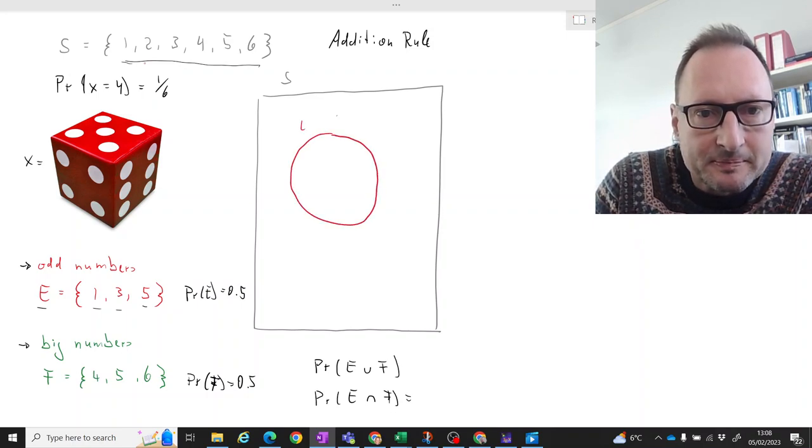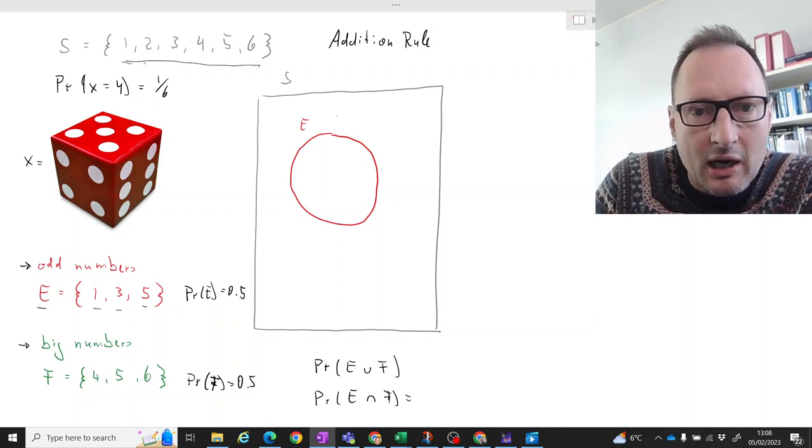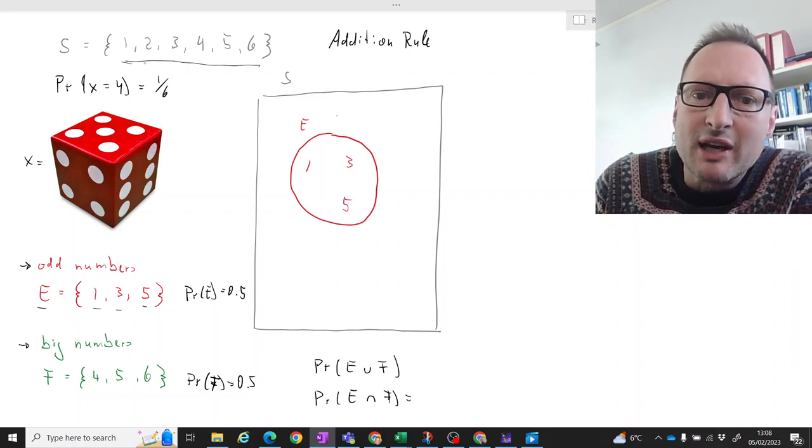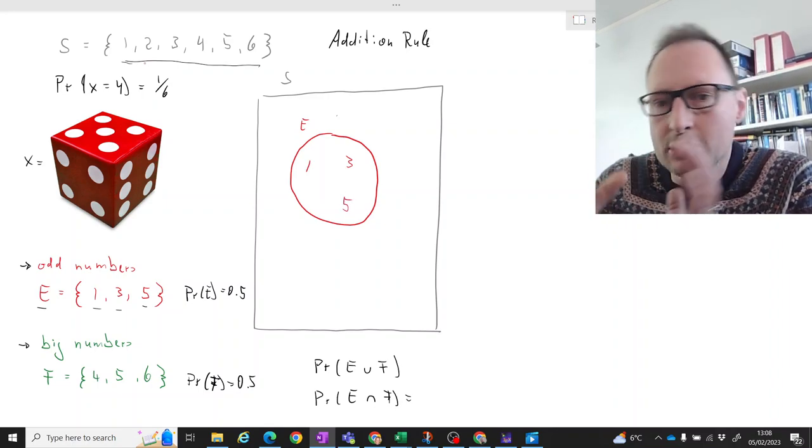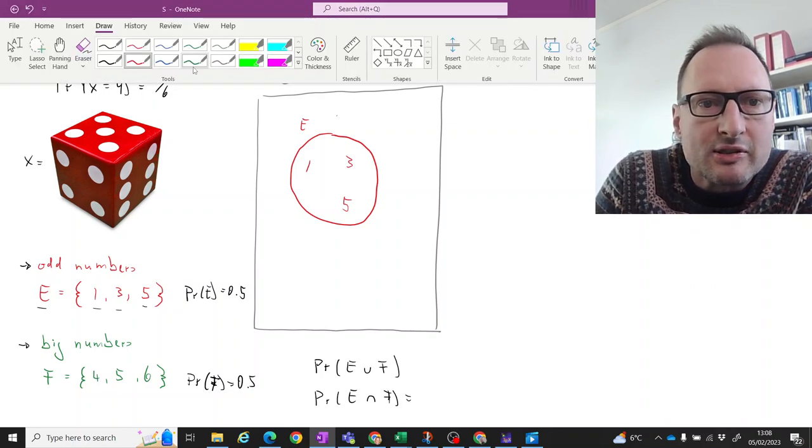So E, that is E. Let's think about the numbers in here: 1, 3, and 5. We only have discrete outcomes, but I'll still use this sort of space here. Hopefully it will make sense.